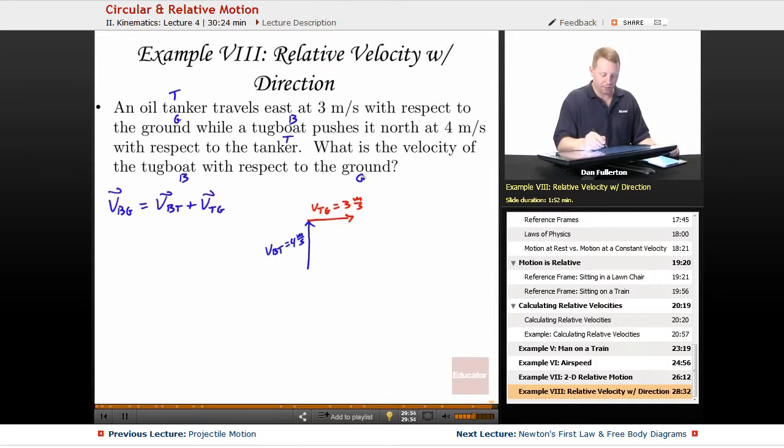To find the velocity of the tugboat with respect to the ground, I'll add these vectors, starting at the starting point of the first and going to the ending point of the last. That's a 3-4-5 right triangle, so the velocity of the tugboat with respect to the ground, VBG, is 5 meters per second. We could use trigonometry if we needed to find the angle exactly.